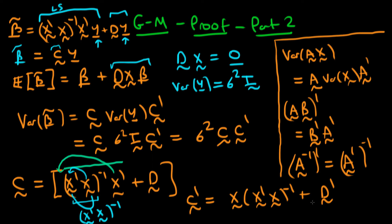So now we're part of the way to finding the variance of beta tilde. In the next video we're going to go ahead and find the variance of beta tilde and compare it with what we got from least squares. I'll see you then.